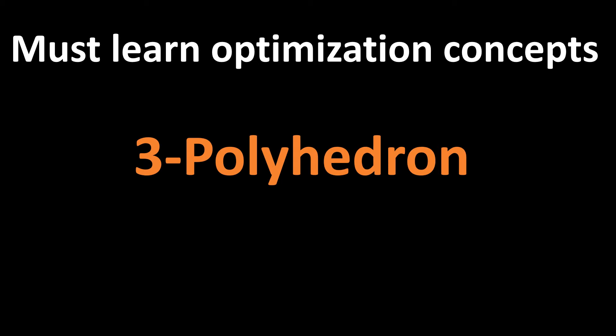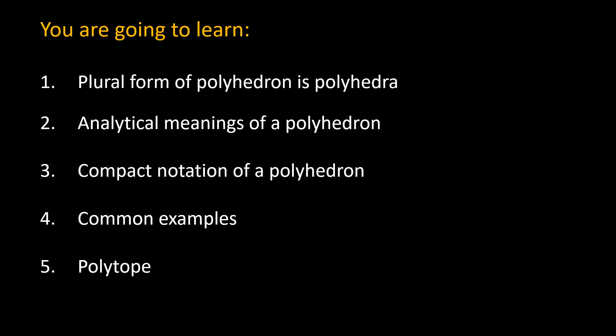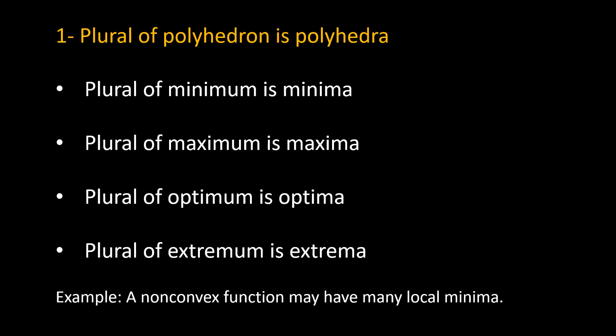Hello and welcome to my channel. This is the third video for a must-learn optimization concept in which we are going to learn what a polyhedron is. By the end of this video, you are going to learn five things: one, the plural form of polyhedron is polyhedra; two, the analytic meaning of a polyhedron; three, how to represent a polyhedron in compact form; four, we will go over some familiar sets that are polyhedra; and five, we will learn a bounded polyhedron is called a polytope.